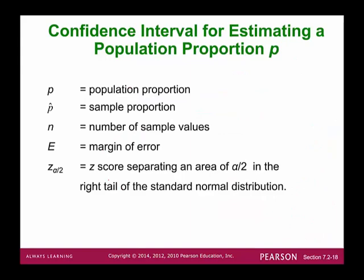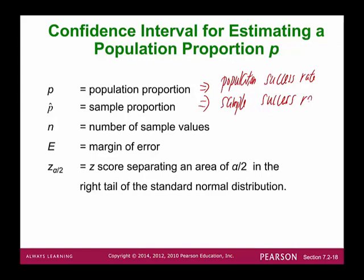P is the population proportion, the population success rate. P-hat is the sample proportion, or sample success rate. Q-hat equals 1 minus p-hat, which is the sample failure rate. N represents the sample size. E is the margin of error, and z alpha over 2 is the critical value, or critical z-score.